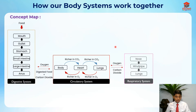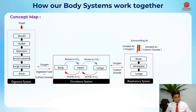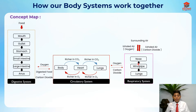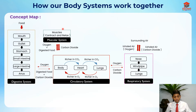Now the respiratory system: we inhale air, and this oxygen goes to the lungs — from the nose, down the windpipe, to the lungs. The carbon dioxide produced comes from the lungs after the process ends, traveling from the lungs back up the windpipe and out through the nose, exhaled as carbon dioxide into the surrounding air.